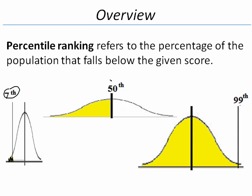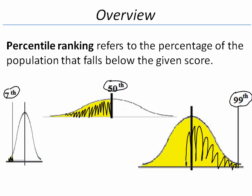In the middle is someone who is at the 50th percentile. This person is above 50% of the population. On the right is someone who is at the 99th percentile, and this person scored above 99% of the population.